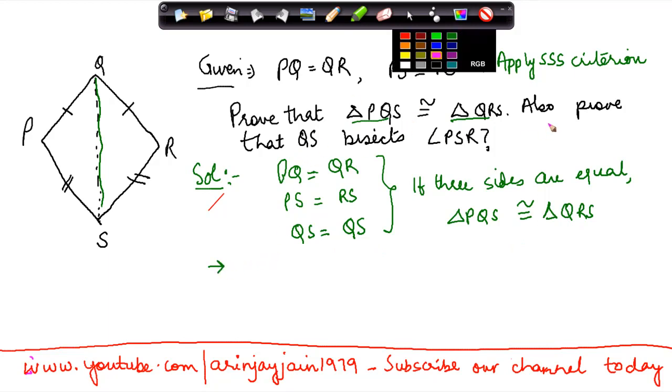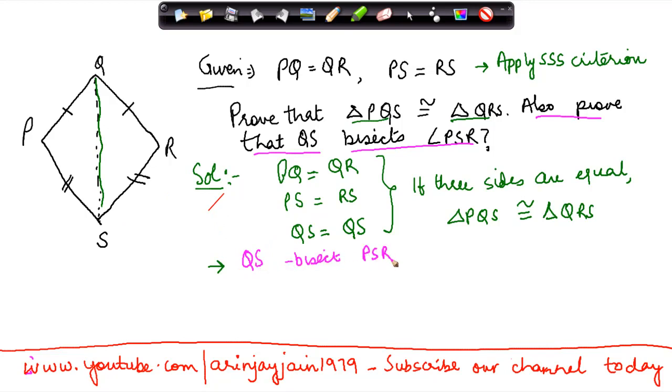Now let's come to the second question. Prove that QS bisects angle PSR. Now if QS were to bisect angle PSR, then basically angle PSQ should be equal to angle QSR. And why is the case? Because then necessarily this angle has to be equal to this angle if QS bisects angle PSR, that will mean that these two parts are equal.